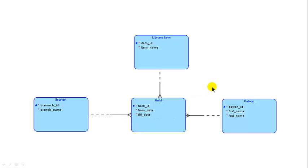So how many attributes does hold have? I hope you got six, because it's got three attributes of its own: hold ID, from date, to date. And of course, because of the one-to-many relationship, it's got three more attributes: branch ID, library item ID, and patron ID. Those are foreign key attributes because of the one-to-many relationship. And not only are they foreign key attributes, they are also required attributes. So hold has six required attributes — because all three visible attributes are required, and the invisible foreign key attributes are also required.